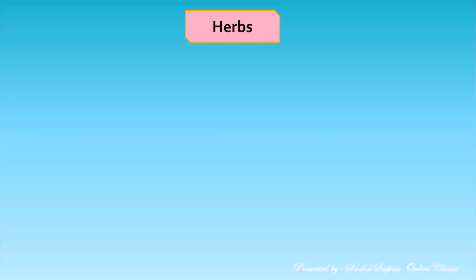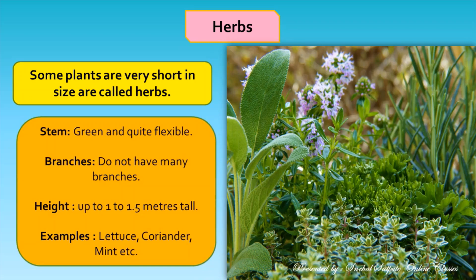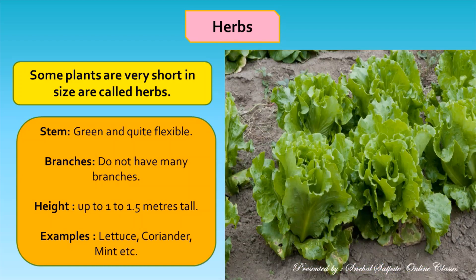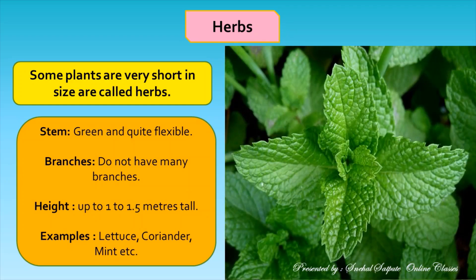Herbs: some plants are very short in size — they are called herbs. Stems of herbs are green, soft, and quite flexible compared to those of trees and shrubs. They do not have many branches. Herbs grow up to 1 to 1.5 meters tall. For example, lettuce, coriander, mint, etc.